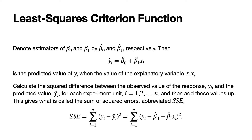Notationally, the sum of squared errors SSE equals the sum from i equals one to n of the squared difference between the observed response y sub i and the predicted response y hat sub i. We can substitute in for y hat sub i the expression beta zero hat plus beta one hat times x sub i. So SSE equals the sum from i equals one to n of the square of the quantity y sub i minus beta zero hat minus beta one hat times x sub i.